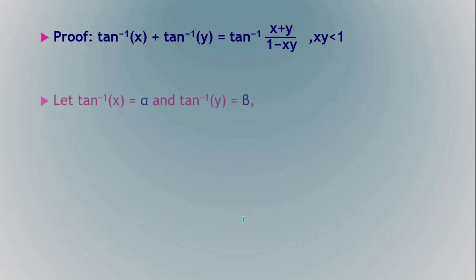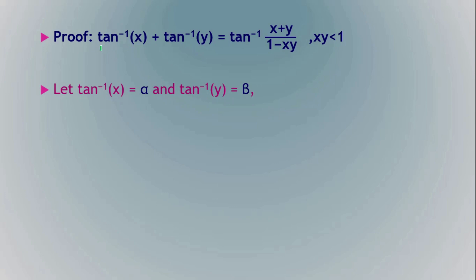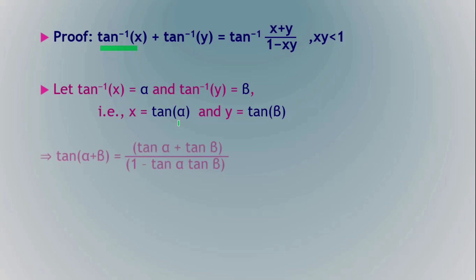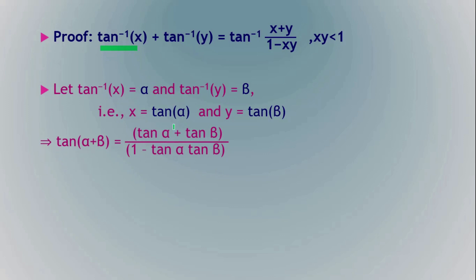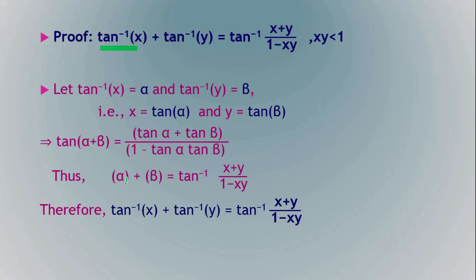For the proof, let tan⁻¹(x) = α and tan⁻¹(y) = β, so x = tan α and y = tan β. Using the formula tan(α + β) = (tan α + tan β)/(1 − tan α · tan β), substitute x and y to get (x + y)/(1 − xy). Taking tan inverse of both sides gives tan⁻¹((x + y)/(1 − xy)) = α + β, which is tan⁻¹(x) + tan⁻¹(y).